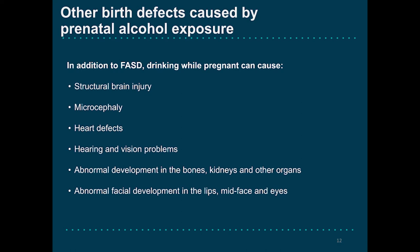We know that drinking during pregnancy can cause brain injury, which is what causes the behavioral effects we've been talking about. But it can also cause birth defects like microcephaly, which causes the baby's head and brain to be much smaller than expected; heart defects; hearing or vision problems; abnormalities in the bones, kidneys, and other organs; and abnormal facial features in the development of the lip, mid-face, and eyes. Not everyone with prenatal alcohol exposure or FASD will have these birth defects, but if there is prenatal alcohol exposure during pregnancy, the child has an increased risk of being born with one or more of these congenital disorders.